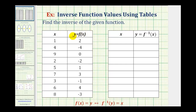We want to find the inverse of the function given here as a table. One way to think of an inverse function is a function that undoes or performs the opposite operation of the original function. So looking at function f, the x values are the inputs, and the y values are the outputs.